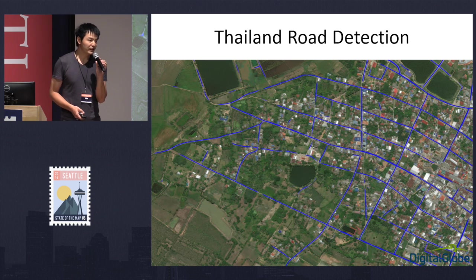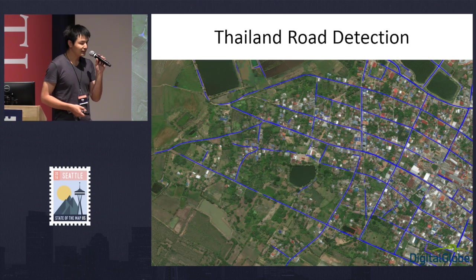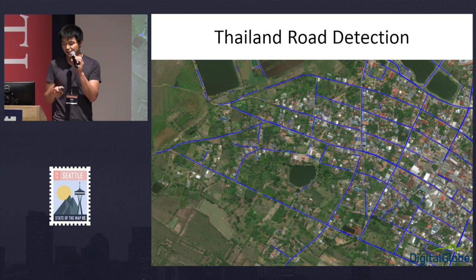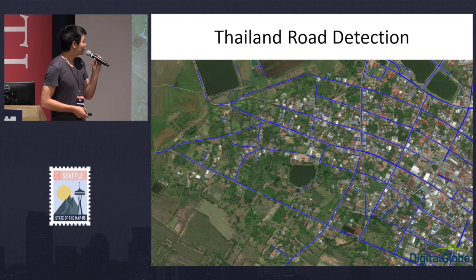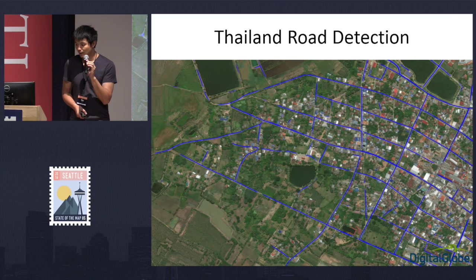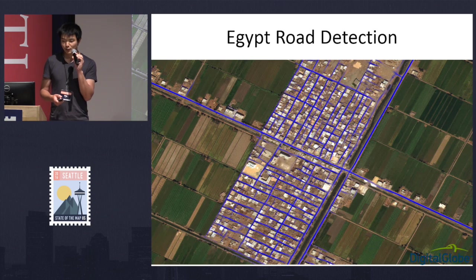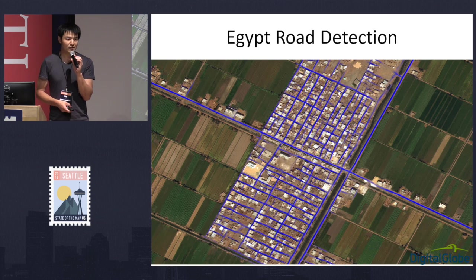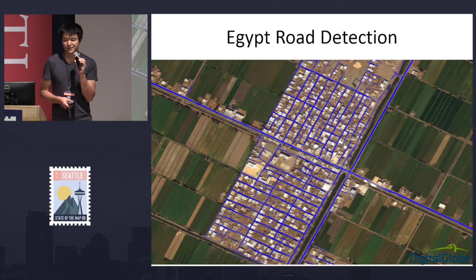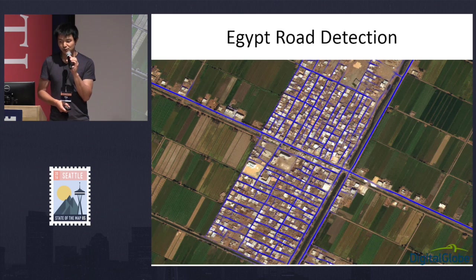With all these improvements, we are already doing an incredible job on detecting roads. This is our final result on one area in Thailand, and you can see the road detection is really good quality. This is another area in Egypt, equally well, and this area is pretty interesting — there's absolutely no road that's paved. Basically, the machine learned to detect roads from just the buildings and form lines surrounding the roads, which is extremely difficult using traditional machine learning techniques.